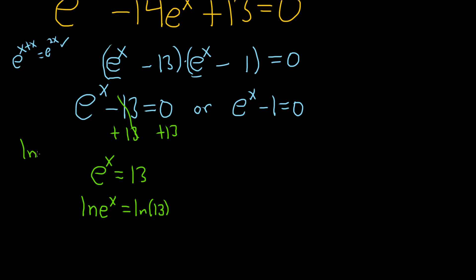And these cancel, right? There's a formula that's super useful in math. It says that the natural log of e to the x is x. This is powerful. So this cancels. And so you get x equals the natural log of 13. So that's one of our answers.